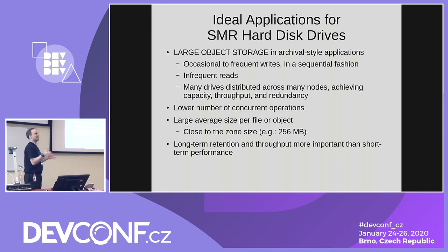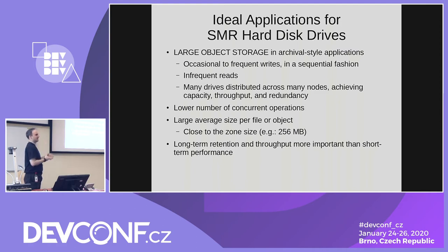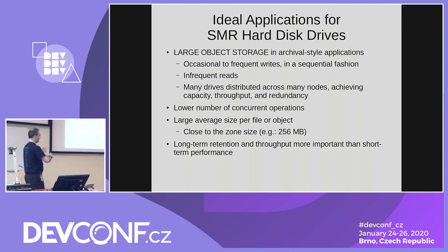I can hear those backup veterans laughing — you've had to do a restore. Ideally there would be many drives distributed across many nodes achieving capacity, throughput, and redundancy. You don't really mind that a hard disk drive will have a maximum throughput of say 180 megabytes per second sequentially — that's perfectly fine in your application. The large average file size is a key for many applications. I previously worked in a backup application that had a large average size of 90 megabytes per file, so a 256 megabyte zone is perfectly normal. Long-term retention would be more important than short-term performance.